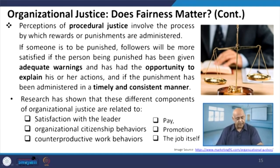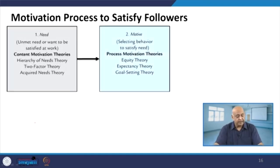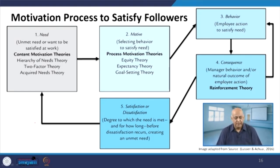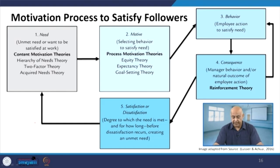When we talk about the motivation process to satisfy followers, we talk about need, motive, and behavior. Whenever we identify the need, this leads to the motive. Once that motive has been achieved, behavior will be reflected accordingly. As a result, there is a natural occurrence of employee action under reinforcement theory, which will be a deciding factor for follower satisfaction.